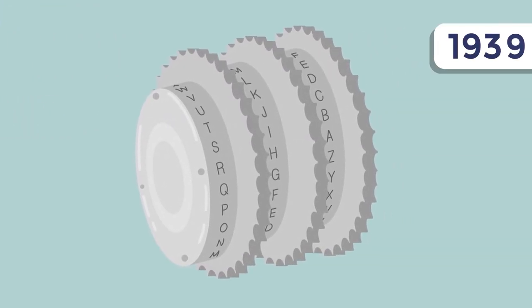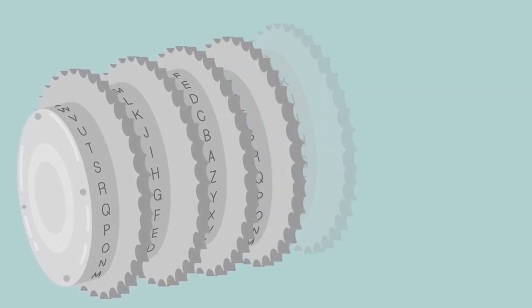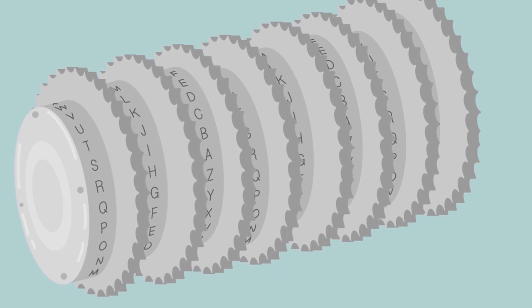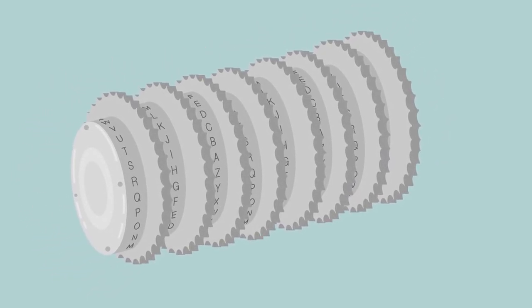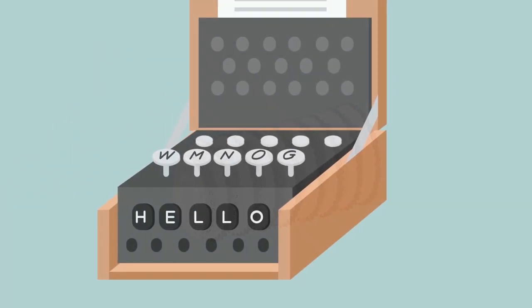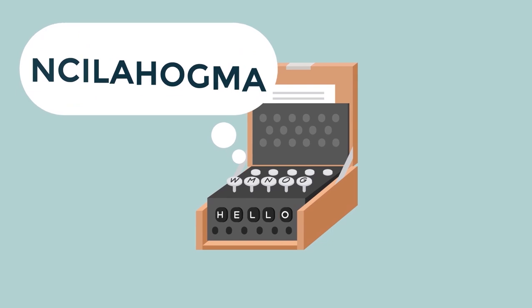Over time, the Germans modified the machine. Since 1938, the device had used eight rotors at once, increasing the number of combinations by a factor of millions. Each rotor was walking. After typing each symbol, it changed its position. So the message was transformed many times before it was sent.